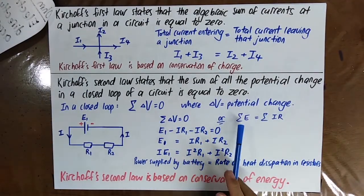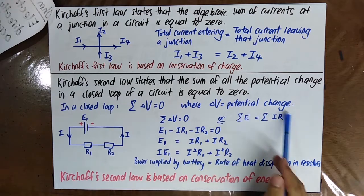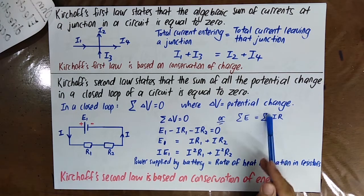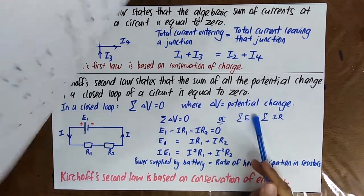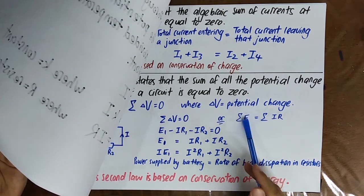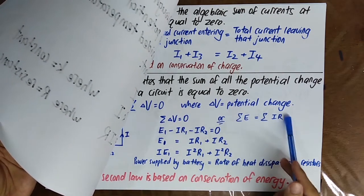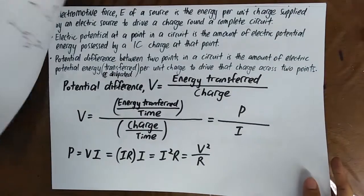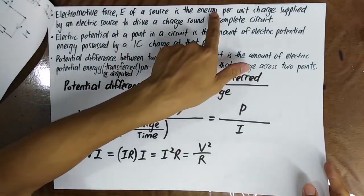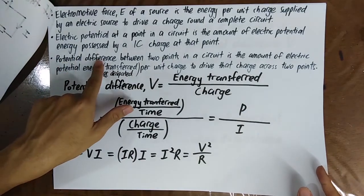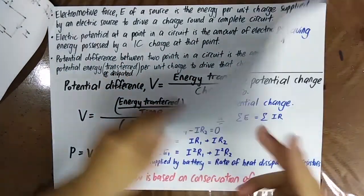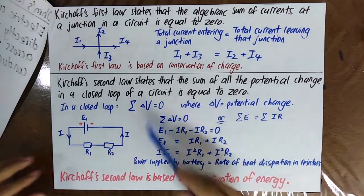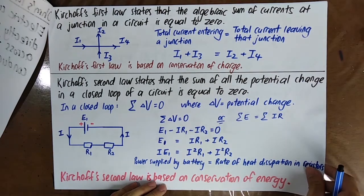I need to remind you that in Kirchhoff's second law, you will use the relation: the summation of electromotive forces equals the summation of potential differences. This is because EMF is the energy supplied to the unit charge, and potential difference is the energy used by the charge. This is exactly the conservation of energy, but I will talk about it in the Kirchhoff's law video, which is next.